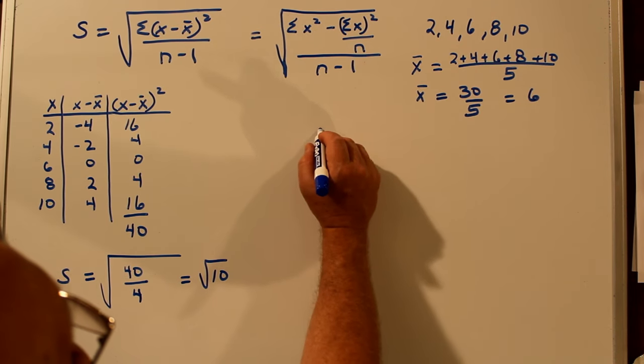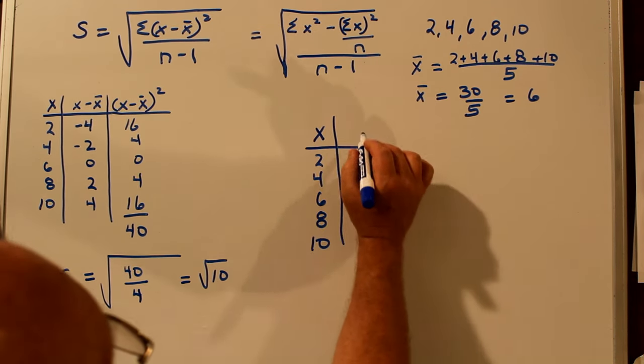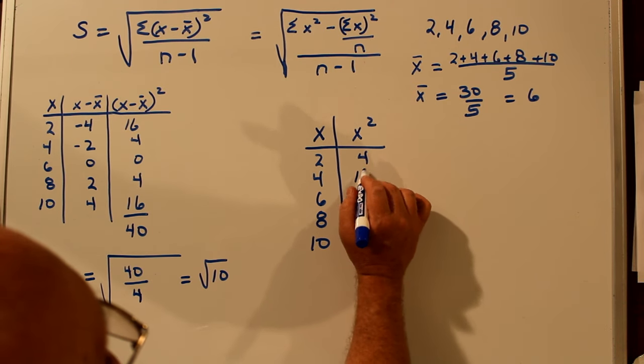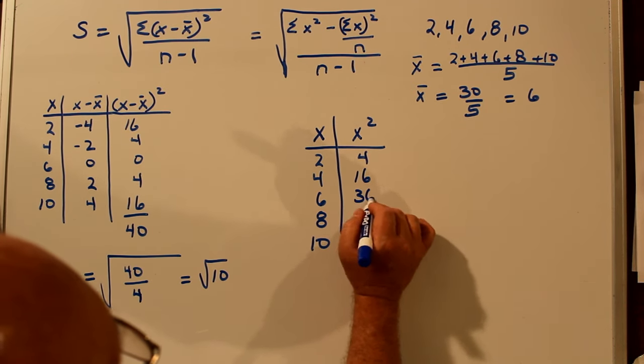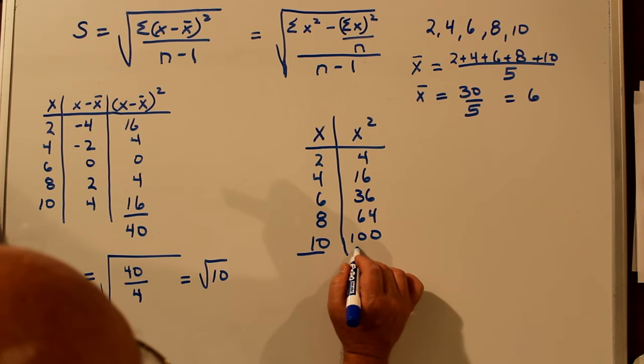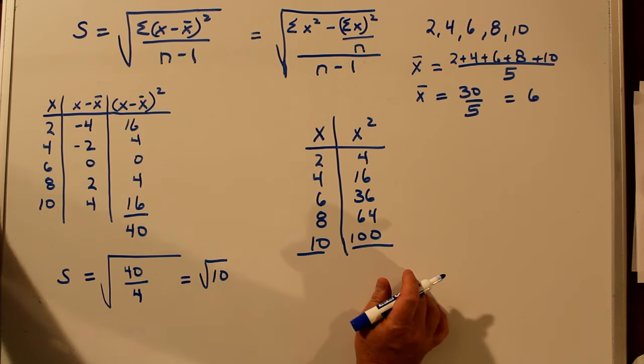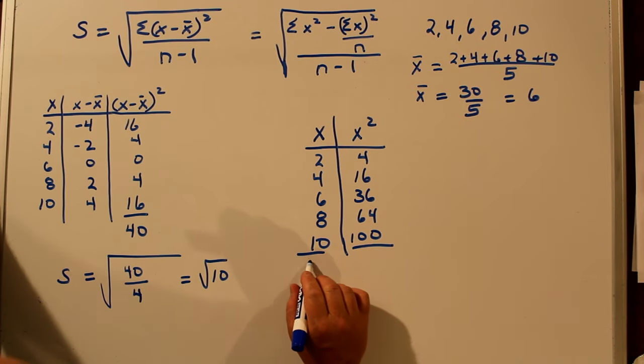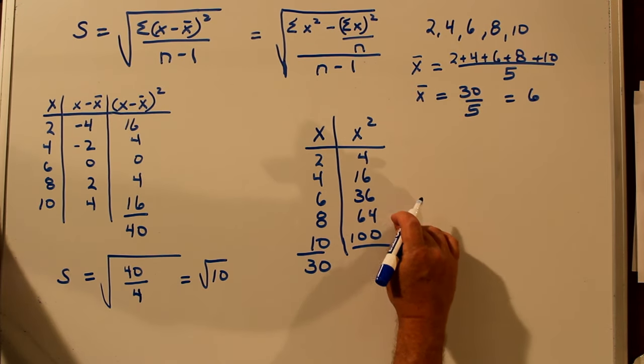So let's make our chart. We have X. And we have X squared. Two squared is four. Four squared is 16. Six squared is 36. Eight squared is 64. And 10 squared is 100. And we need the sum of each one of these columns. So here we have 30. And here we have 220.